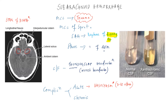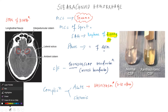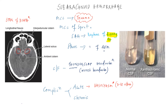That is why we treat these patients with nimodipine. Nimodipine is a calcium channel blocker which acts as a vasodilator, and the purpose of giving nimodipine in patients with subarachnoid hemorrhage is to prevent this vasospasm.